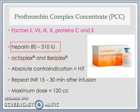Now let's talk about prothrombin complex concentrates and warfarin reversal. In Canada, PCC is available under the trade names of Octaplex and Beriplex. In the United States, it is known as Kcentra. PCC is used for emergency reversal of warfarin anticoagulation in the setting of life-threatening or severe bleeding, or urgent procedure or surgery required within 6 hours. PCC contains heparin, and hence the absolute contraindication is heparin-induced thrombocytopenia, or HIT. Repeat the INR 15 to 30 minutes after the PCC infusion to confirm reversal. The maximum total dose is 120 cc or 3,000 international units.